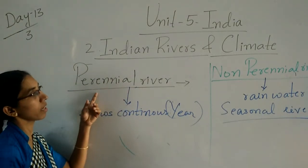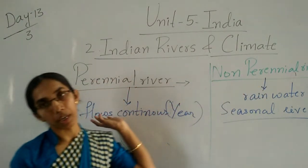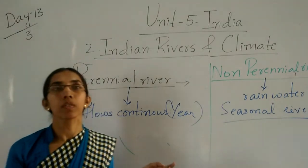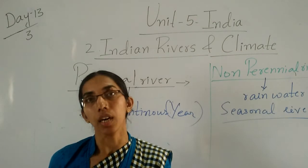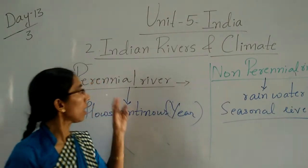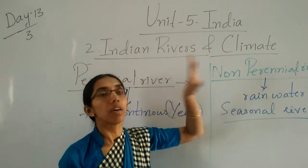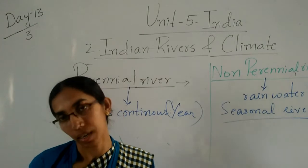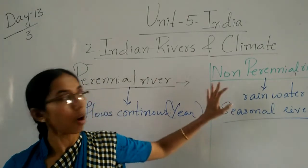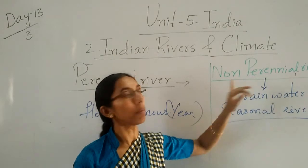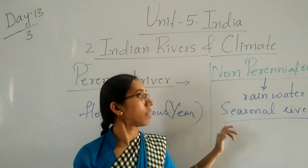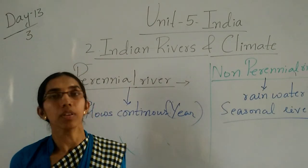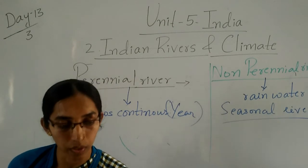So rivers are perennial and non-perennial. Perennial rivers flow continuously throughout the year. Non-perennial rivers depend upon rainwater and are also called seasonal rivers. Now we will see which rivers fall into each category.